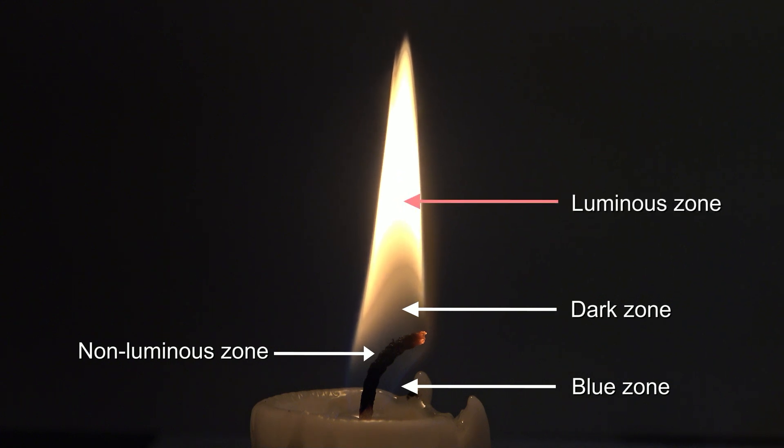In the luminous zone, a majority of the wax is burned, which causes a lot of heat to be released. The heat causes the soot particles to glow but not to burn, because there is still a lack of oxygen.